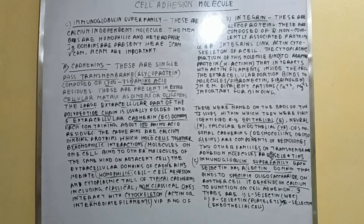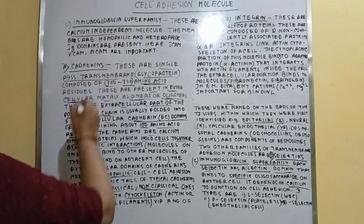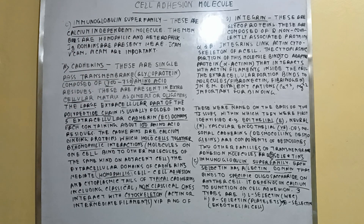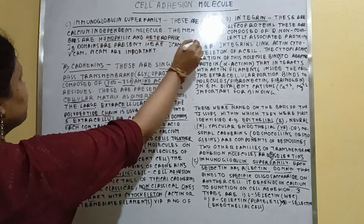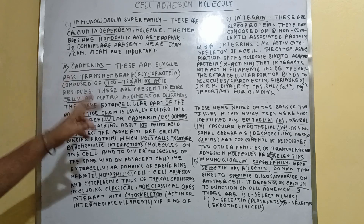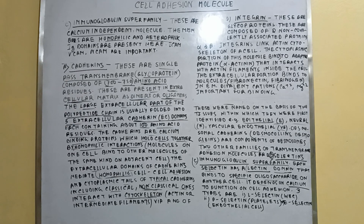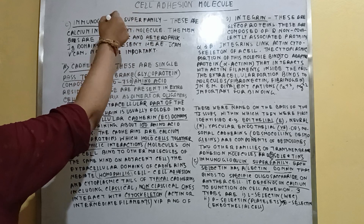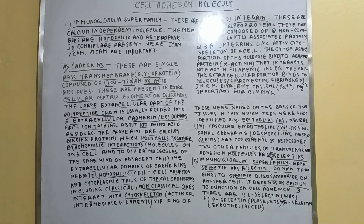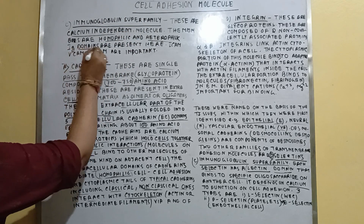Number 3 is the immunoglobulin superfamily protein. These are calcium independent — not dependent on the calcium molecule. The binding is both homophilic and heterophilic — both types of binding are possible here. These immunoglobulin domains are present in the immunoglobulin superfamily transmembrane protein.